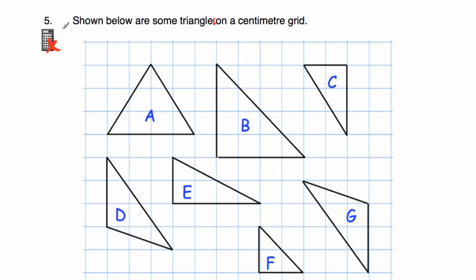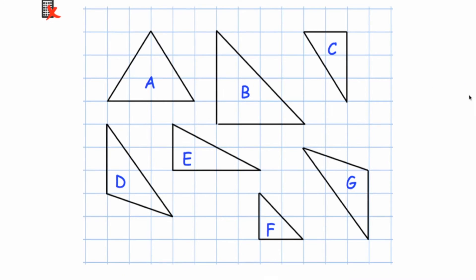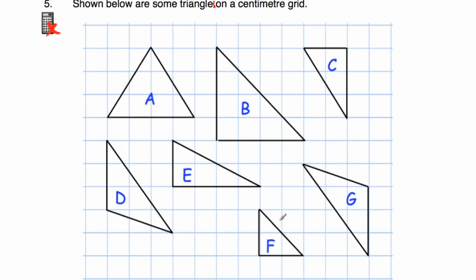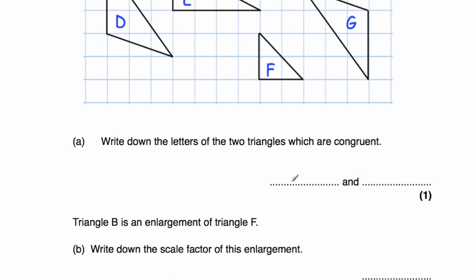Question number five: shown below are some triangles on a centimetre grid — triangles A, B, C, D, E, F, G. Part A says: write down the letters of two triangles that are congruent. F is smaller than the others. C and E are right-angled triangles but different sizes. That leaves us with D and G — both scalene triangles. D goes down three and across three to a point, and G mirrors that going up. D and G are the same shape and size, so they are congruent.